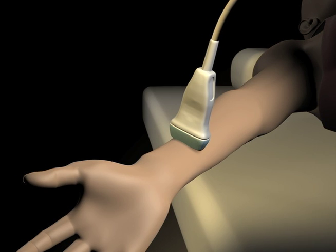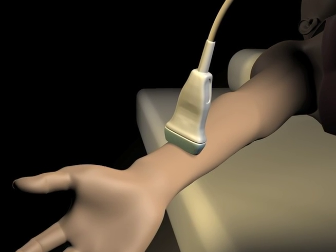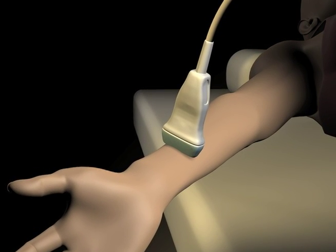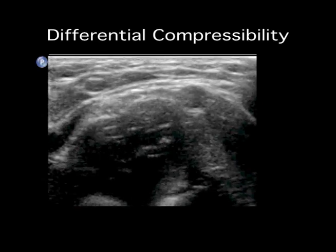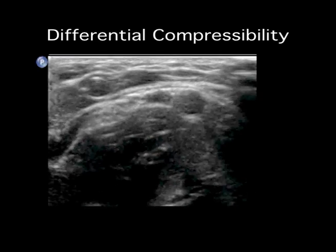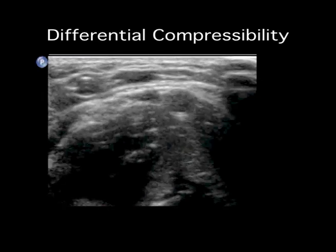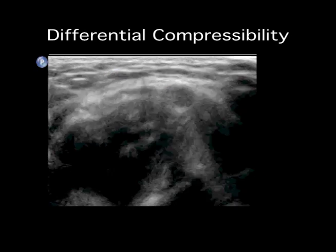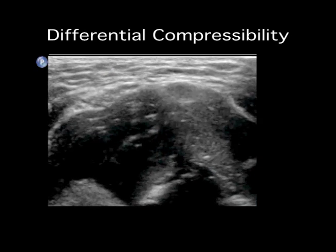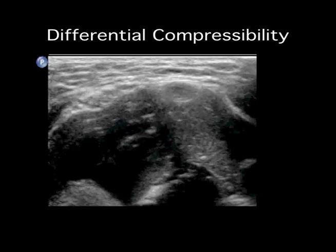Ultrasound can be used to identify the radial artery anywhere along its course in the forearm. This sonogram of the antecubital fossa demonstrates the difference in sonographic appearance of arteries and veins. Veins are easily compressible, and arteries are less compressible and pulsatile.